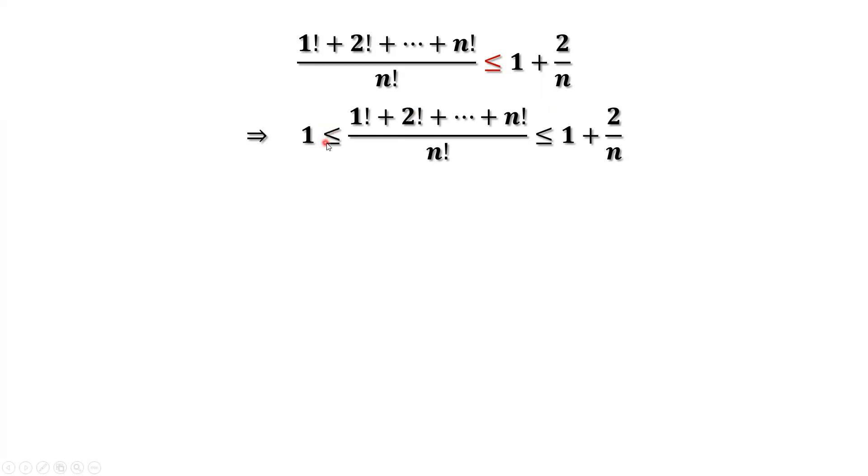1 less than or equal to this sequence. It's obvious because the numerator is bigger than the denominator. We have n factorial here, and we have more items here.